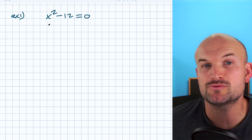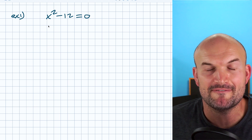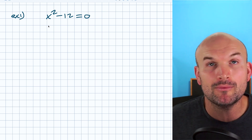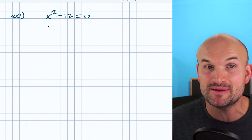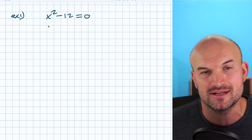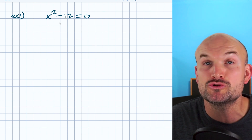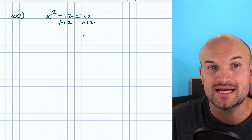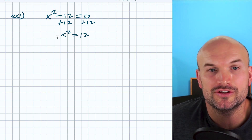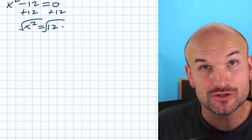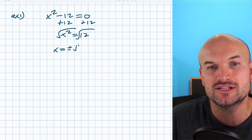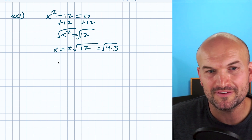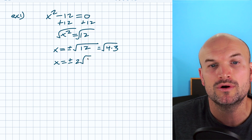Now let's take a look at x squared minus 12 equals zero. Hopefully you recognize the fastest, best way to solve this is to use inverse operations. Most students are not going to want to factor this. Let's stick with the easiest approach: first isolate the variable by adding 12 to both sides, giving x squared equals 12. Now undo the squaring by taking the square root of both sides — remember to include the plus or minus — giving x equals plus or minus the square root of 12. We can break up the square root of 12 as 4 times 3, simplifying to x equals plus or minus 2 radical 3.